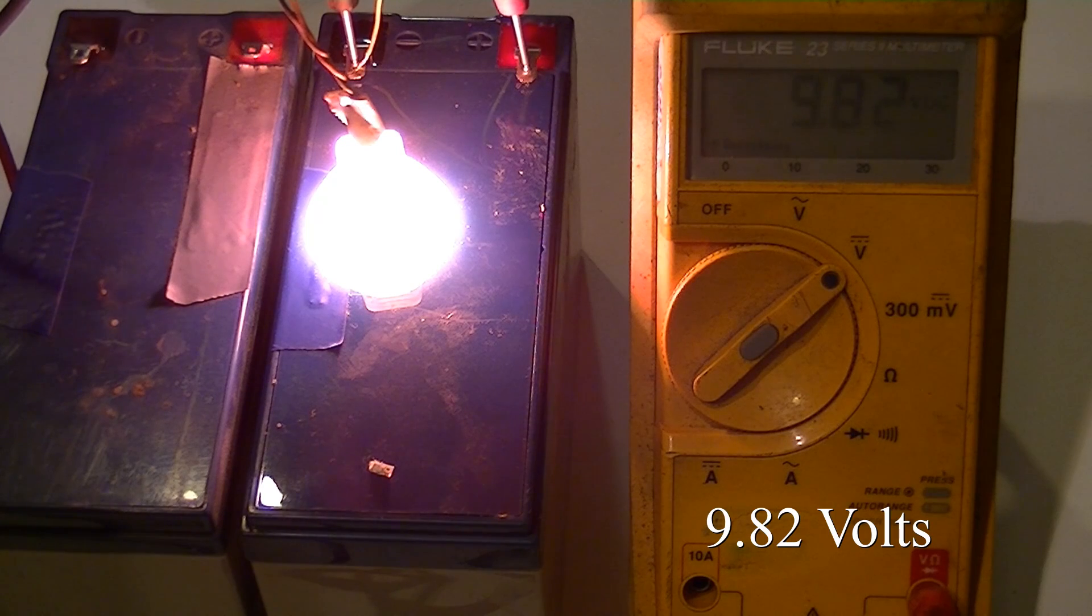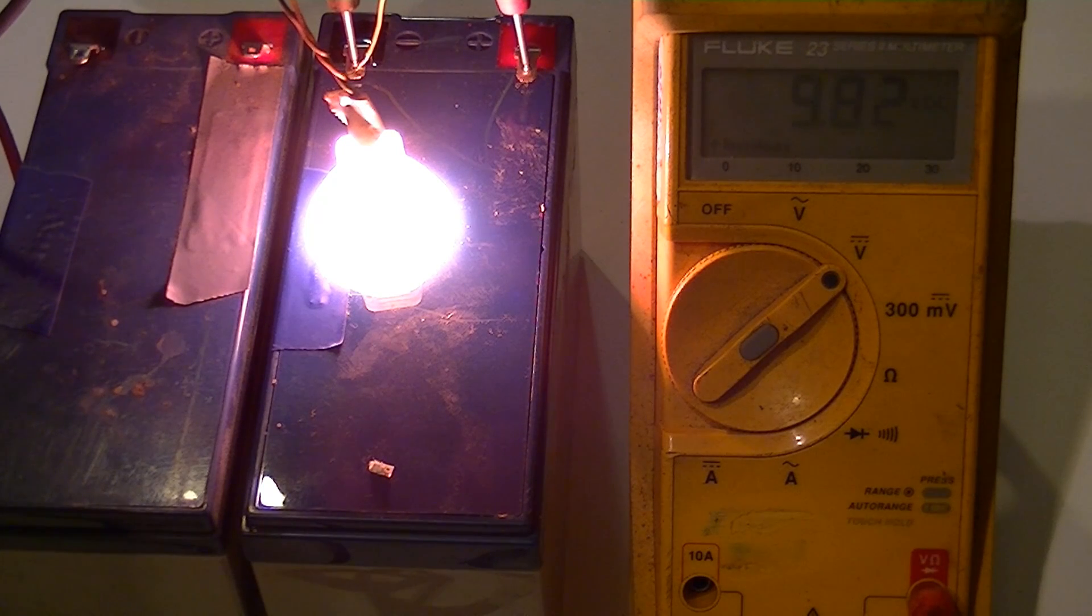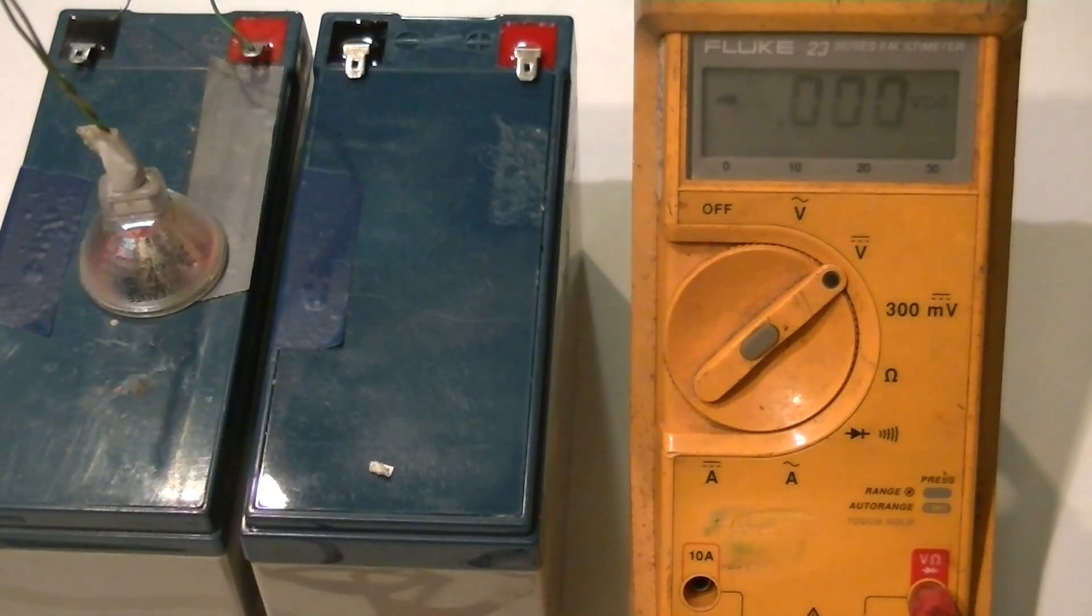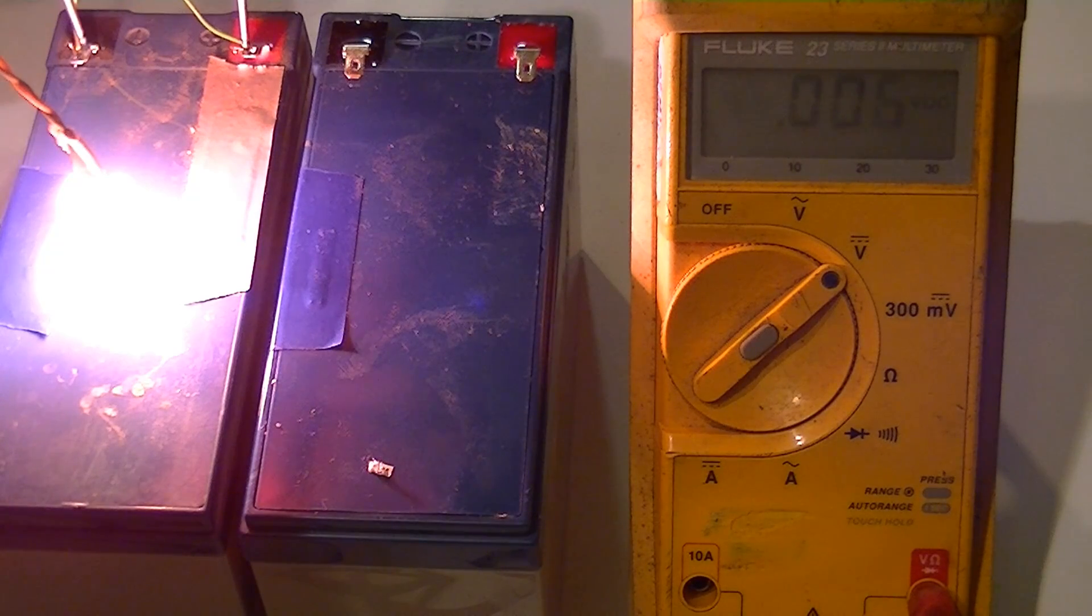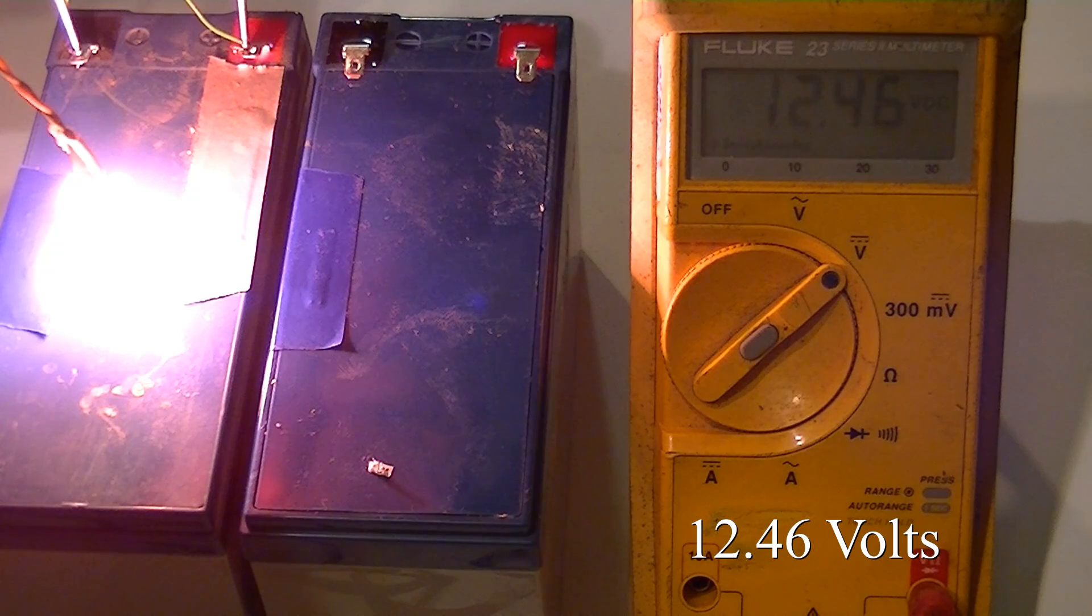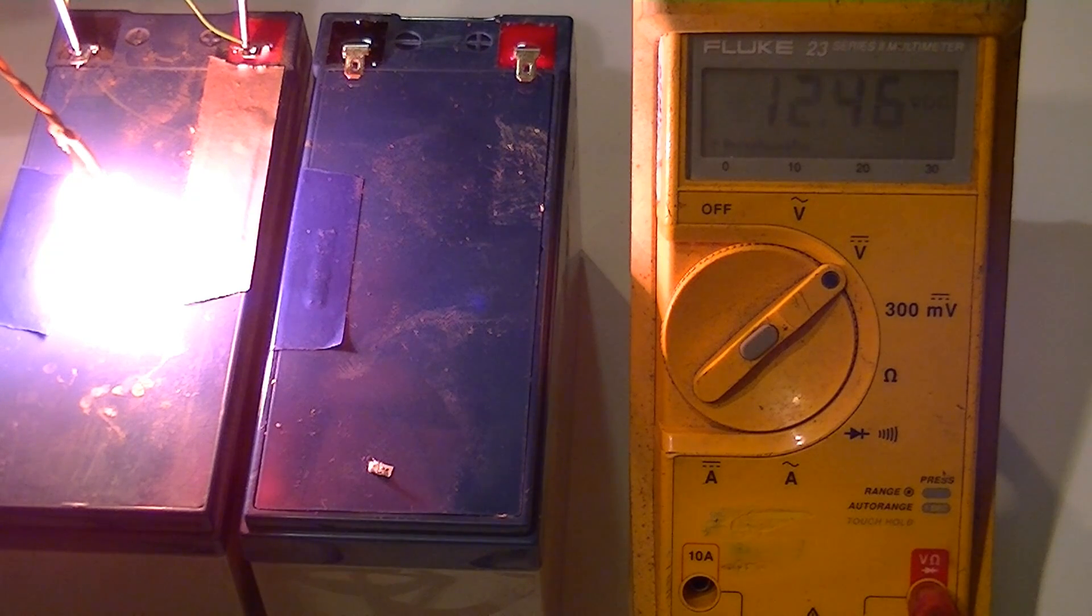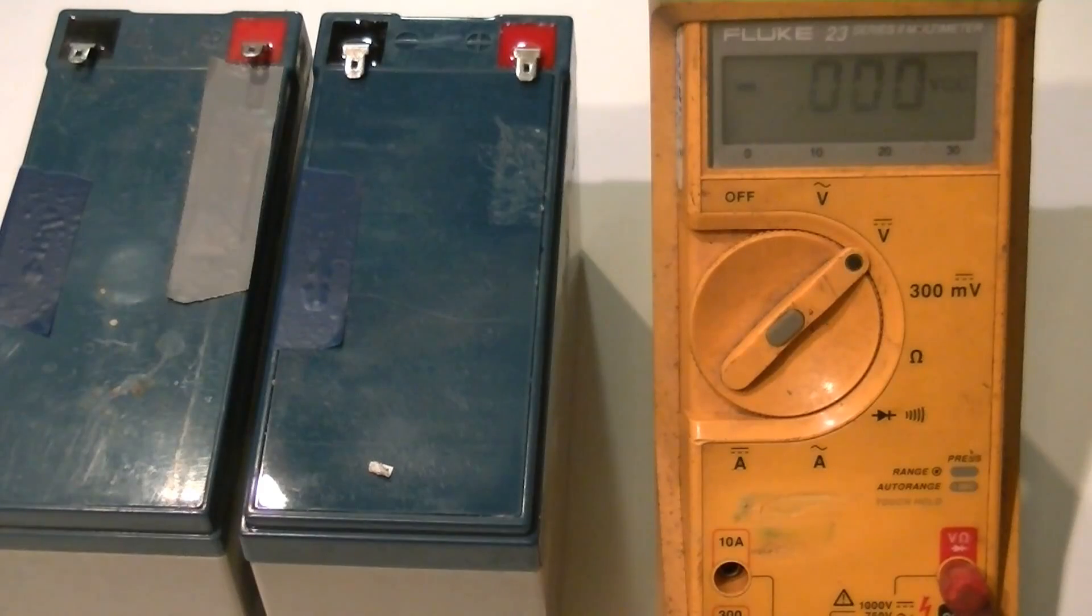You can now see the voltage has decreased considerably. Now the other battery. As you can see with this battery, the voltage has not dropped considerably. Now you can see why you should give a battery a load while you test it.